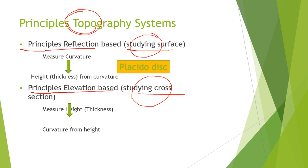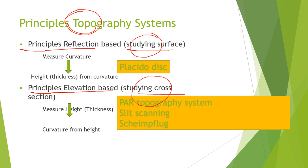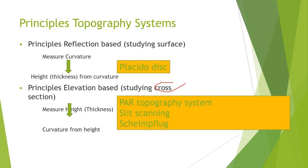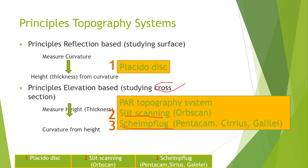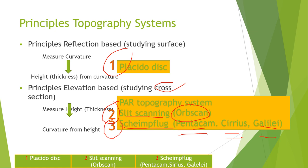The reflection-based system is the Placido disk, while the cross-section-based systems are the slit scanning system and the Scheimpflug system. In normal practice we have three basic principles: the Placido disk, the slit scanning which is used in Orbscan, and the Scheimpflug camera which is used in Pentacam, Cirrus, and Galilei. We are going to talk about these three basic principles one by one.